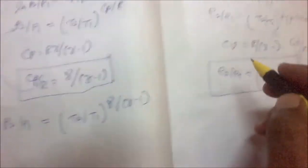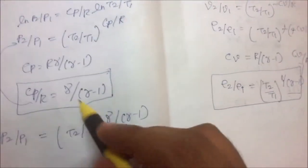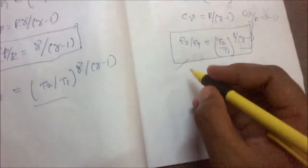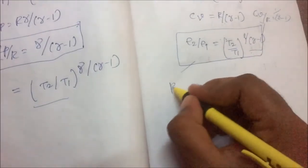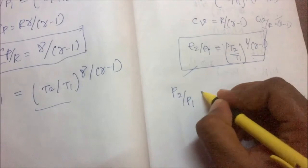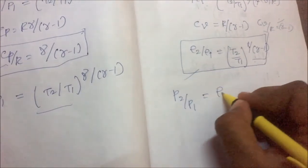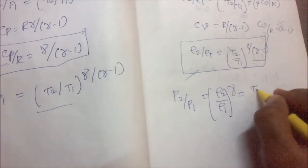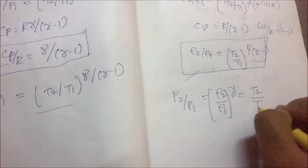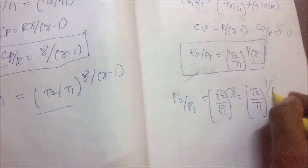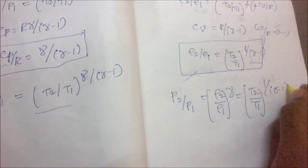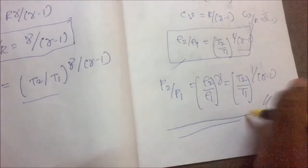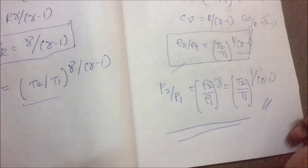Now we have both relations. Comparing these two, we can derive the relation between pressure and density: (P2/P1) to the power of 1/(γ−1) and (ρ2/ρ1) to the power of γ give the combined pressure-density-temperature relation. This is the complete relation between pressure, density, and temperature for an isentropic process.